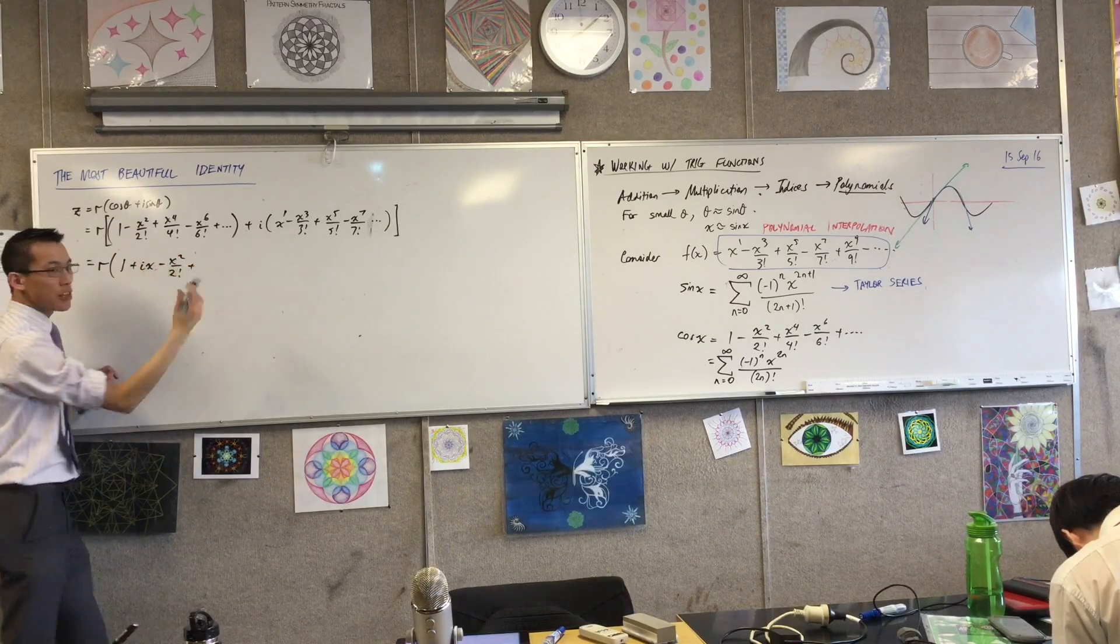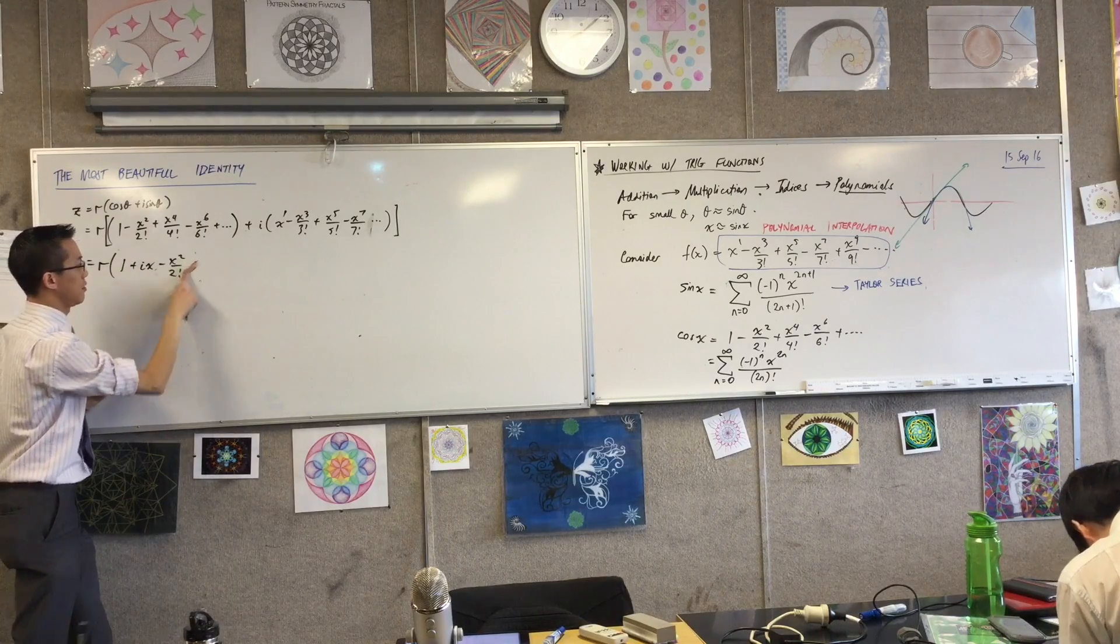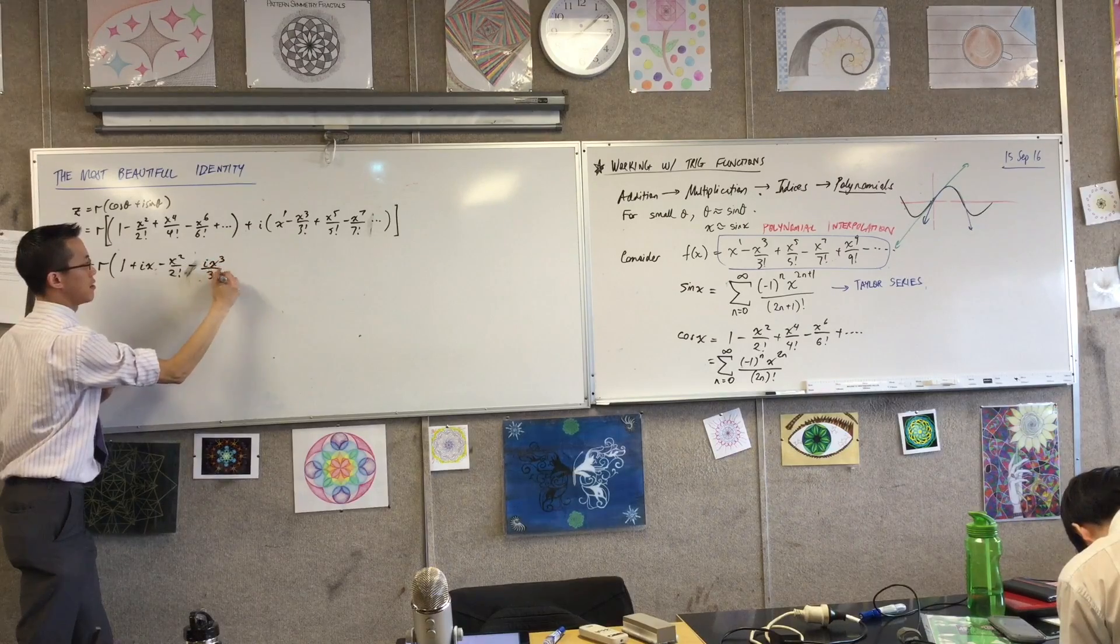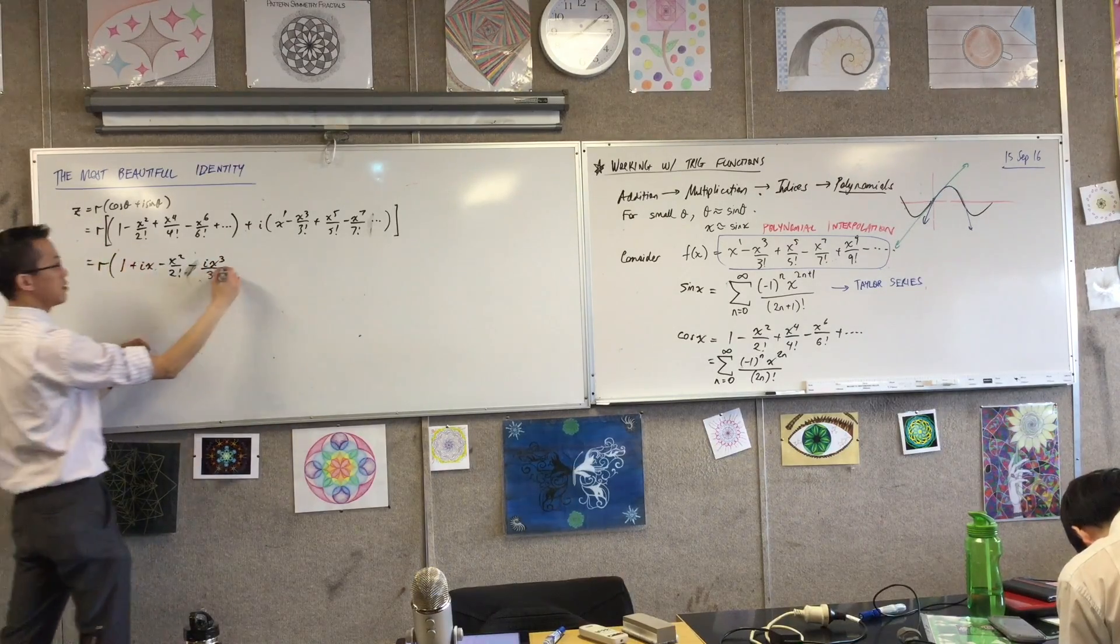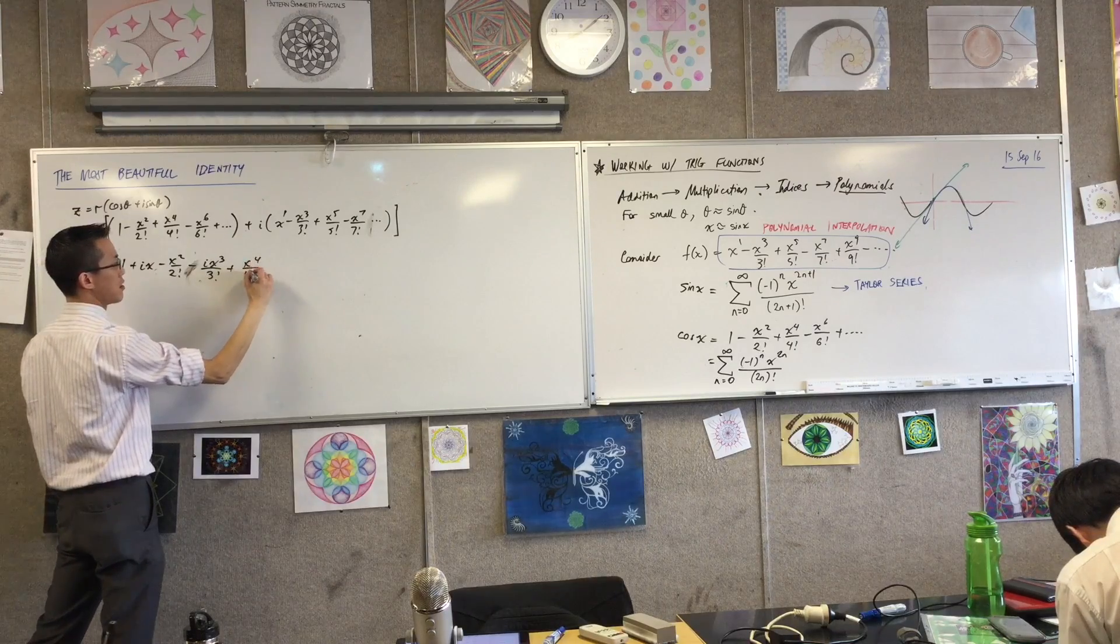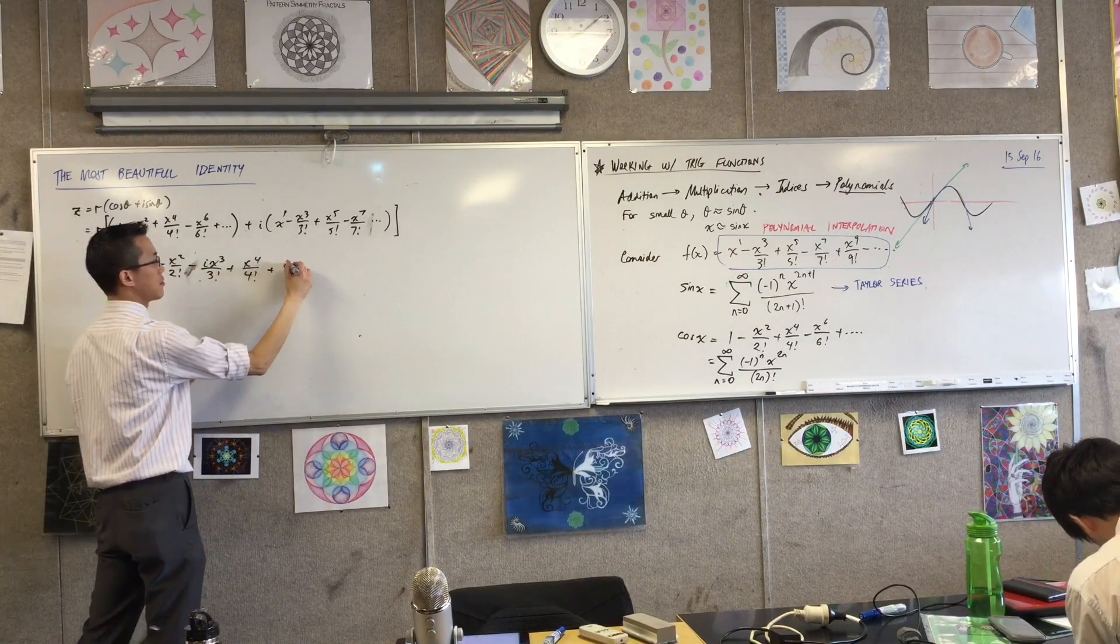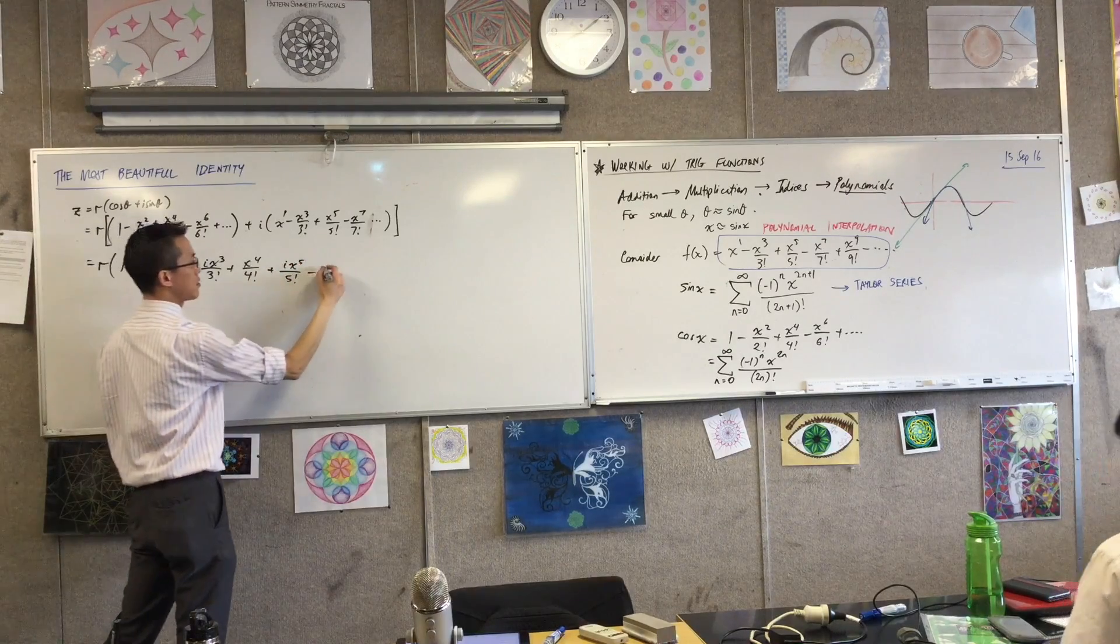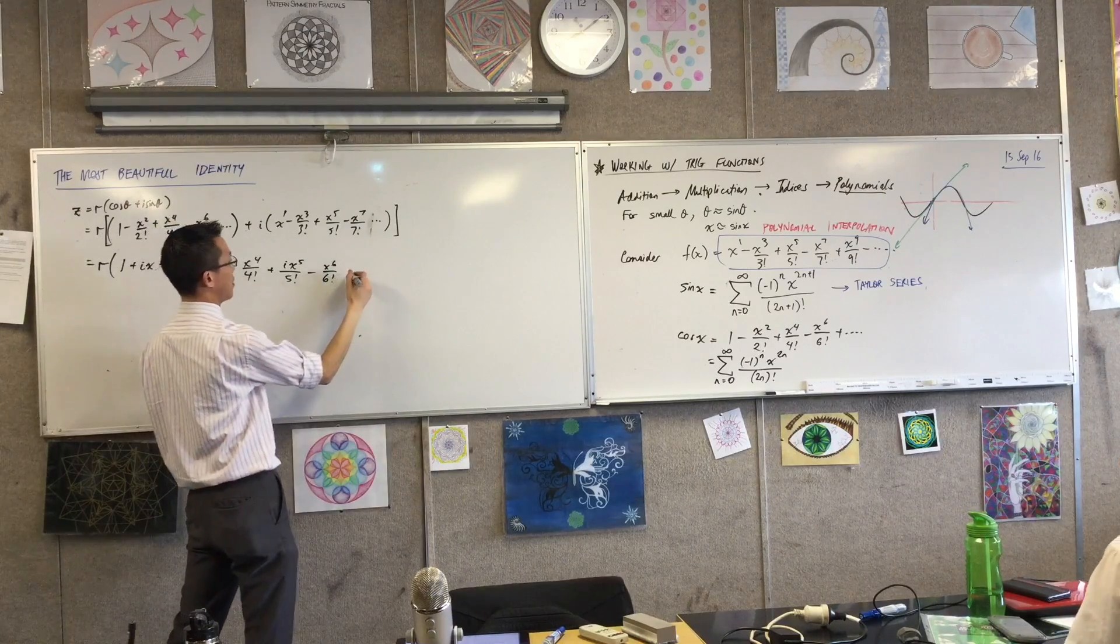And then the next one, all the odd ones have i's on them, and actually it's a minus. This next one over here. Where's the 5? It's a plus. Where's the 6? It's a minus. I think if I do one more, it'll be enough. Minus.